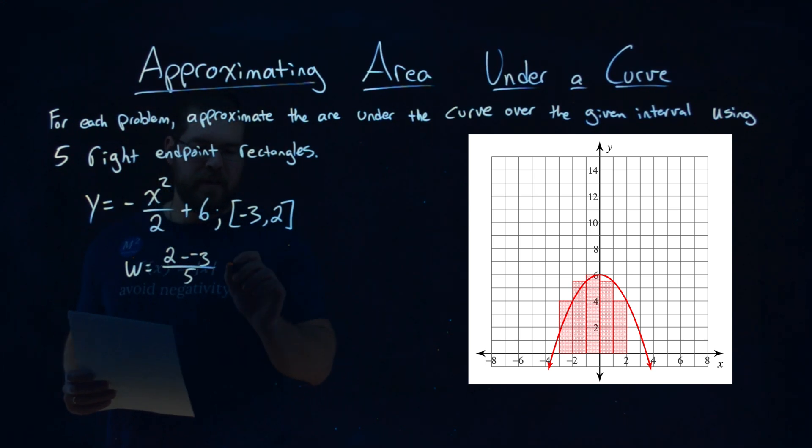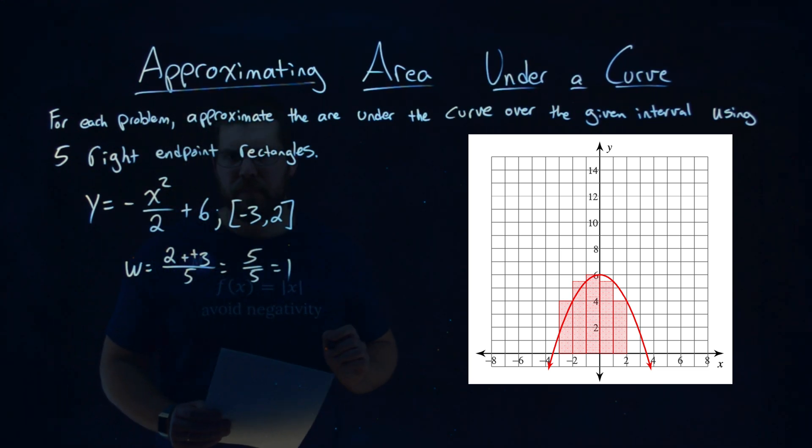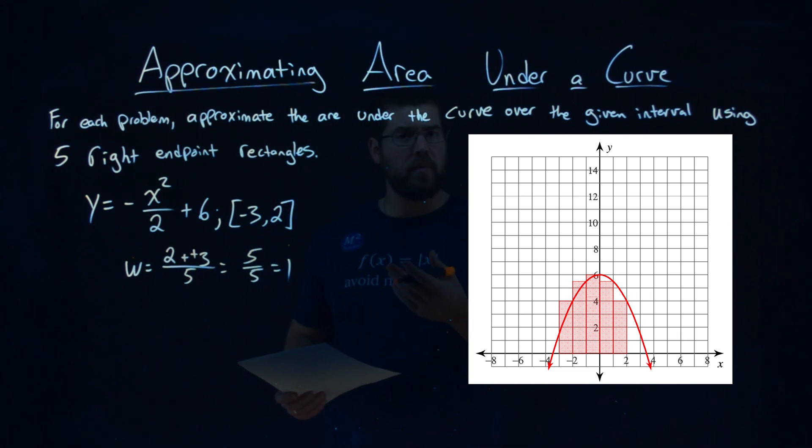So to simplify that: 2 minus negative 3 is positive 5 over 5, which equals 1. So each one of our rectangles has to have a width of 1.